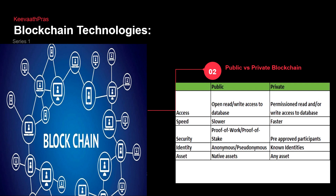Public means anybody has access; private means only those with permission. Public is slower because of the amount of peers participating; private is faster. In security, public blockchain uses proof of work and proof of stake — this is also how cryptocurrency works. In private, it is pre-approved participants, not proof of work or proof of stake. Identity in public is anonymous; in private it is known persons. The asset in public is a native asset; in private it can be any asset.